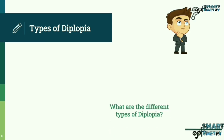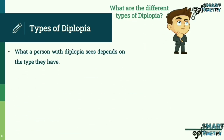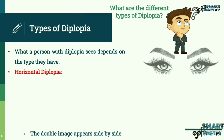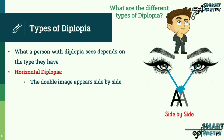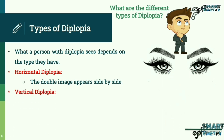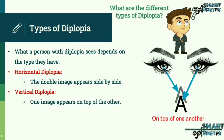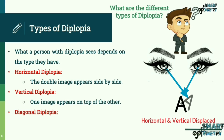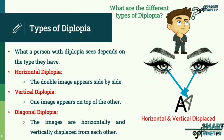What are the different types of diplopia? What a person with diplopia sees depends on the type they have. In horizontal diplopia, the double image appears side by side. In vertical diplopia, one image appears on top of the other. In diagonal diplopia, the images are both horizontally and vertically displaced from each other.